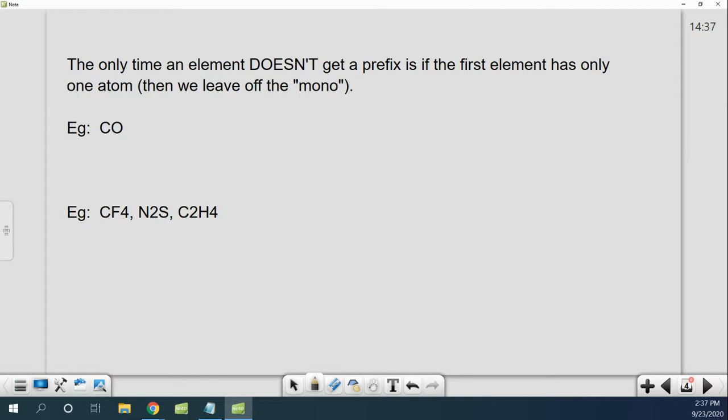The only time an element does not get a prefix is if it's the first element and it has only one atom. Then you just leave off the mono. So for example here I've got carbon and I've got oxygen so we're going to call it oxide. Carbon is the first element and it has one atom so I don't have to put anything on there. I can leave it as carbon. Oxygen is not the first element and so now I have to give it a prefix. And the prefix for one is mono. So it's carbon monoxide.